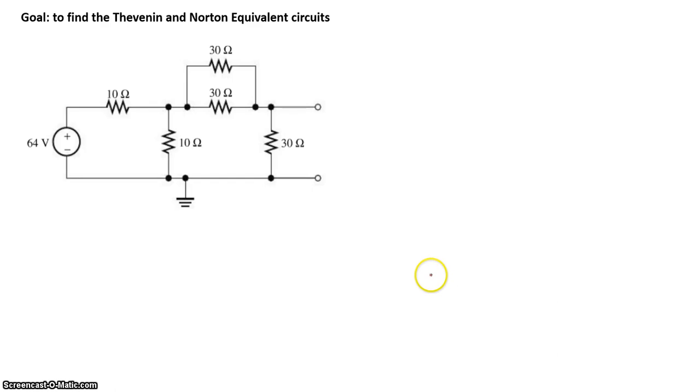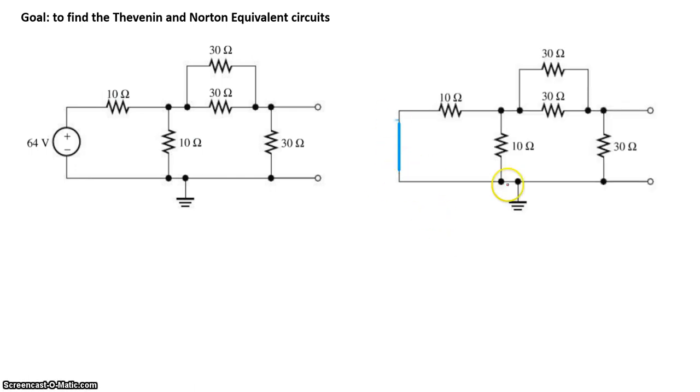Let's do one more example. For this circuit, our goal is to figure out the Thevenin equivalent circuit and the Norton equivalent circuit. Again, let's start out by finding the Thevenin resistance. In this case, we'll zero out the voltage source. Voltage equal to zero basically means two nodes are at the same potential. That basically indicates a short circuit. So we replace a voltage source with a short.